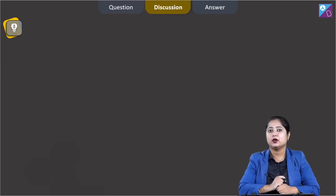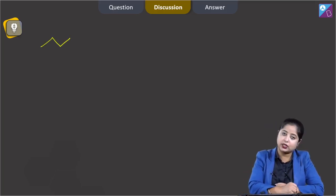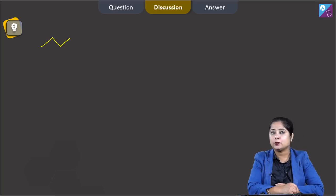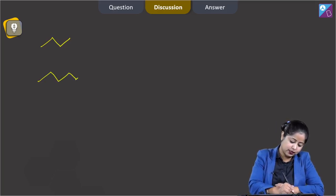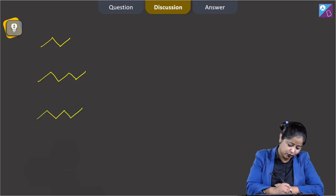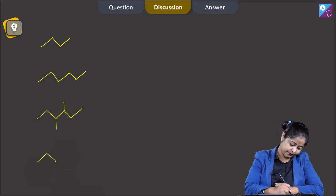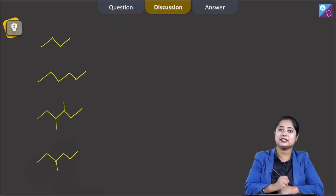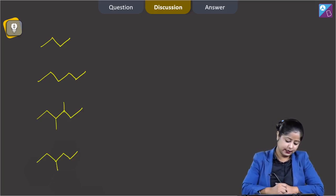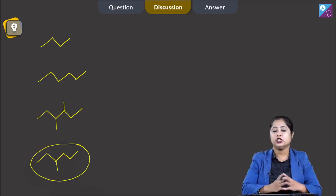Unsymmetrical alkanes will not be obtained in good yield using Wurtz reaction. In the given options, N-butane is a symmetrical alkane, N-hexane is also a symmetrical alkane, and 3,4-dimethylhexane is also a symmetrical alkane. But the last option, 3-methylhexane, is an unsymmetrical alkane, so it won't be obtained in good yield using Wurtz reaction.